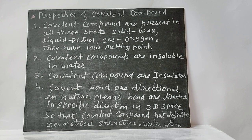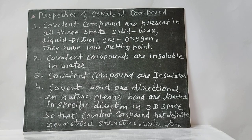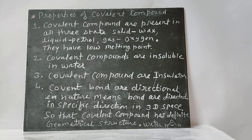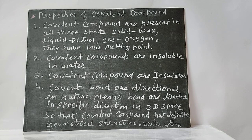Properties of covalent compounds: covalent compounds can exist in all three states — solid, liquid, and gas. Covalent compounds are generally insoluble in water and are insulators. Covalent bonds are directional in nature, meaning they are directed in a specific direction in three-dimensional space, so covalent compounds have a definite geometrical structure. For example, water is an angular molecule while methane is tetrahedral in shape.